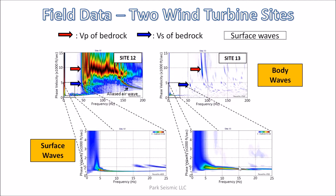These are dispersion images processed from two seismic field records obtained from two adjacent wind turbine sites, number 12 and number 13. At site 12, we see a sharply defined horizontal energy trend occurring approximately at 5,000 feet per second, and another trend roughly at 10,000 feet per second. At site 13, we can identify two trends at the same phase velocities of 5,000 and 10,000 feet per second, however they are very narrow-banded in frequency, which is very common in refraction phenomena.